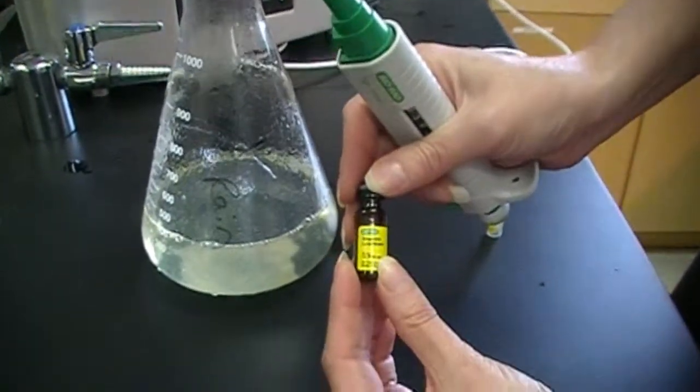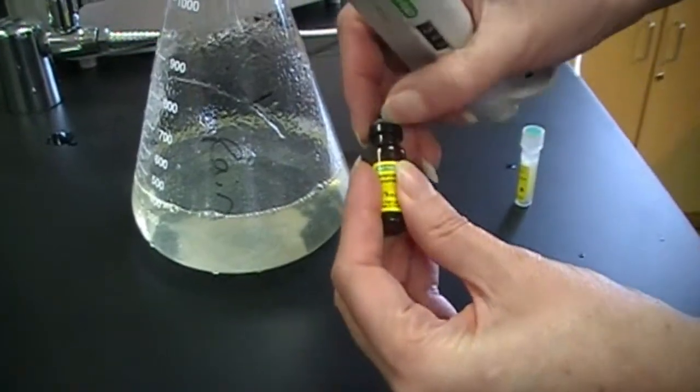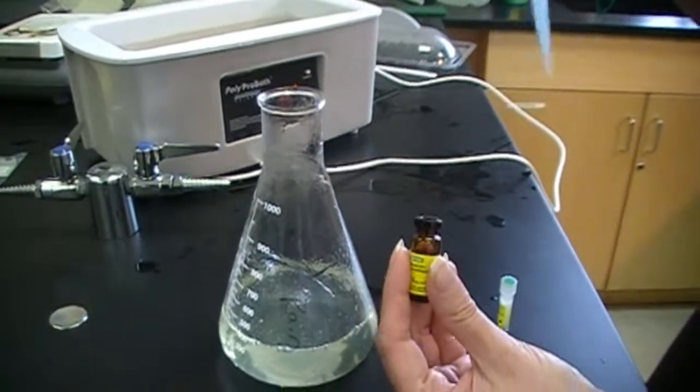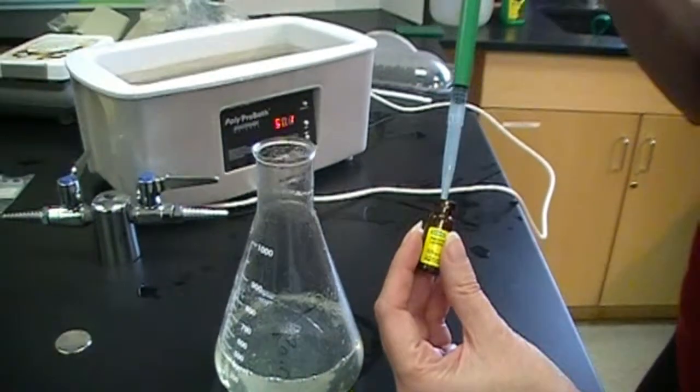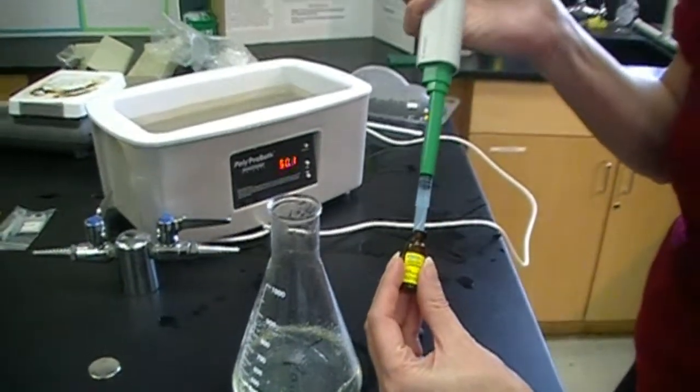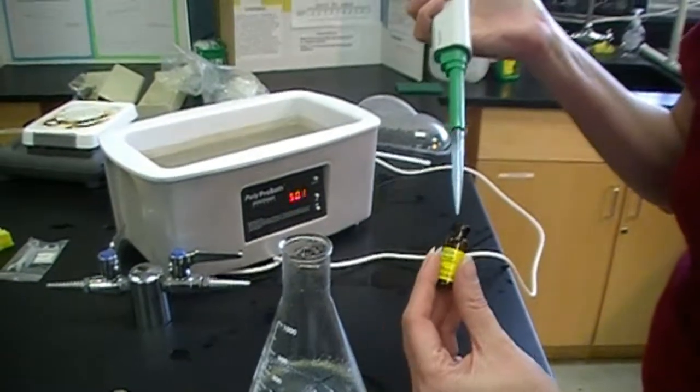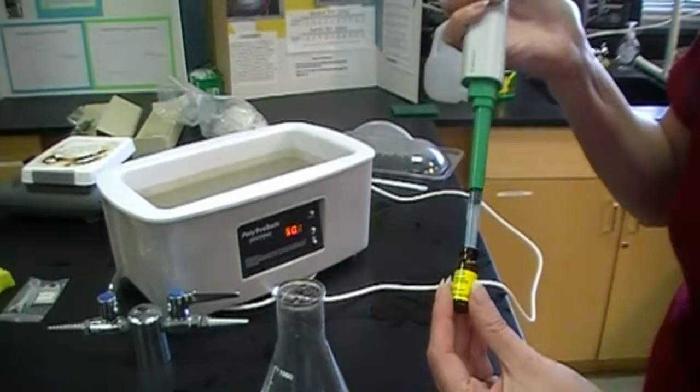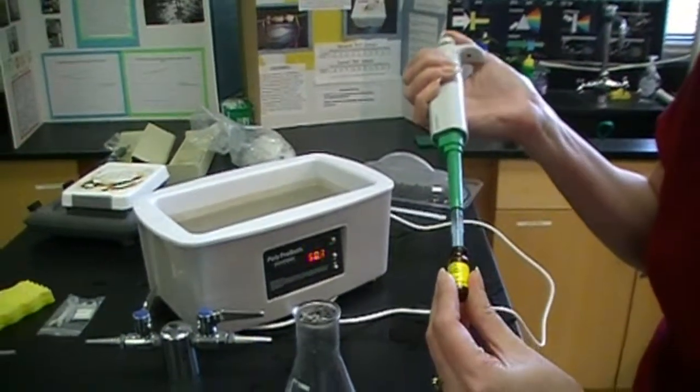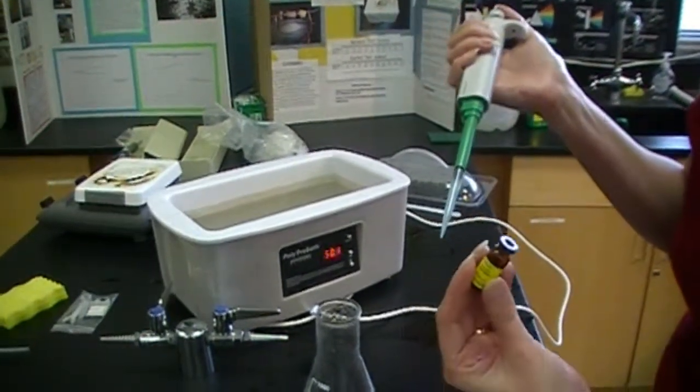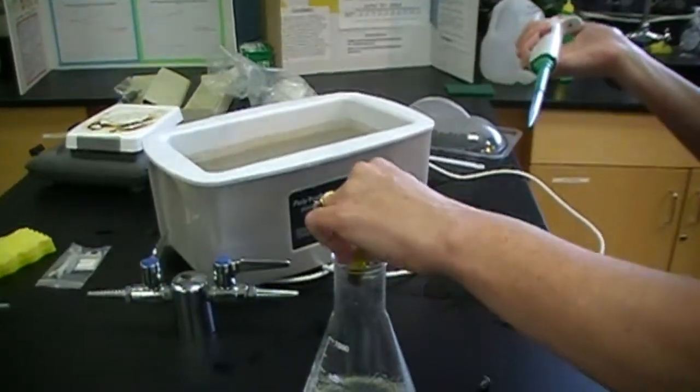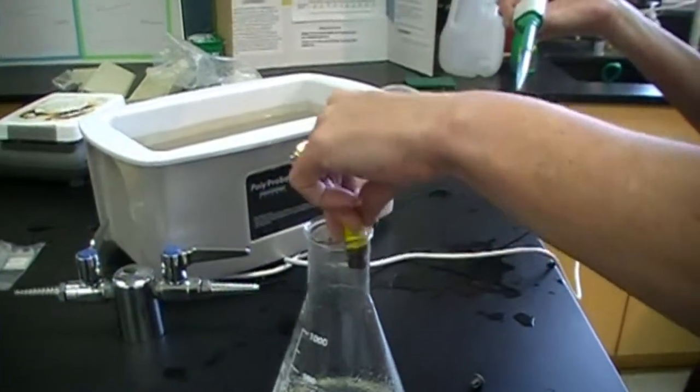This is our vial of the ampicillin, which has been reconstituted with the C. elegans wash buffer. And so right now, I'm simply going to pipette this back up. Let's try it again. Or not. We're simply going to pour it in. And let's make sure we've got every drop of that.